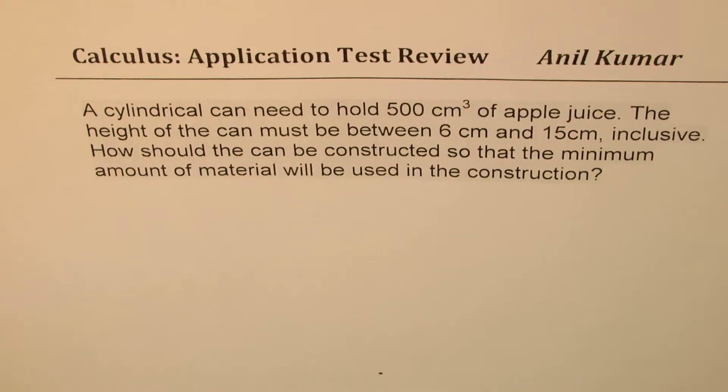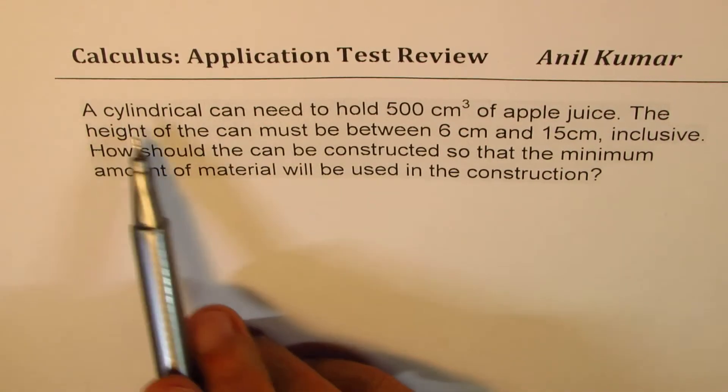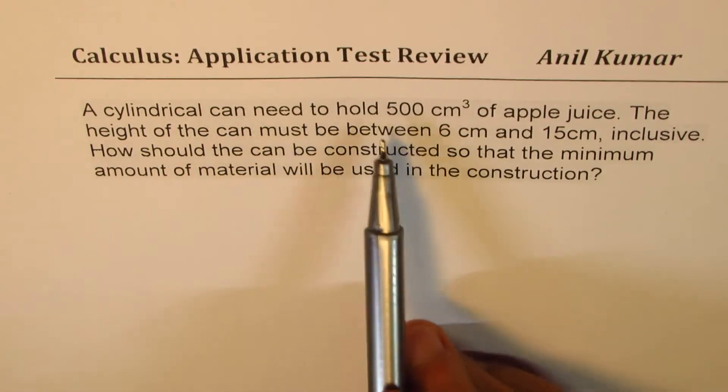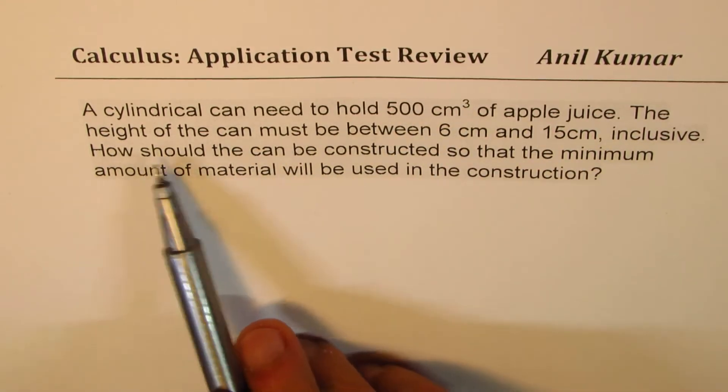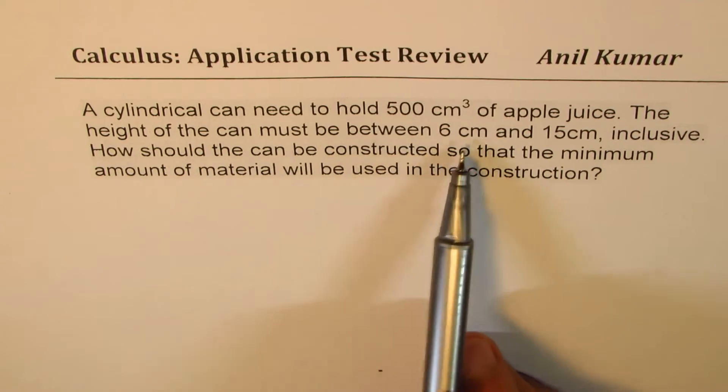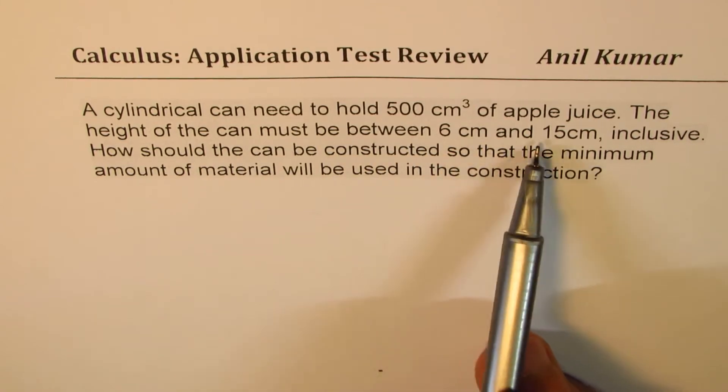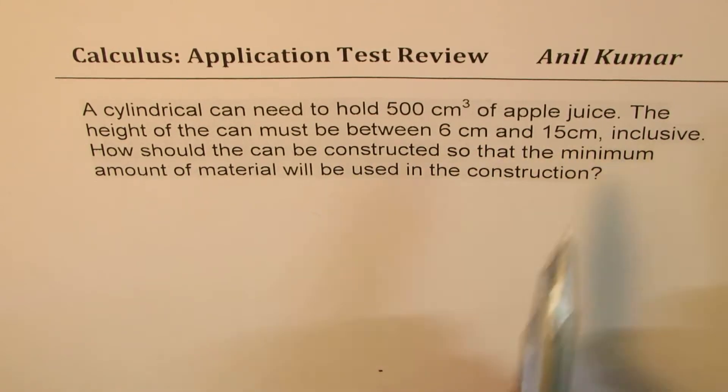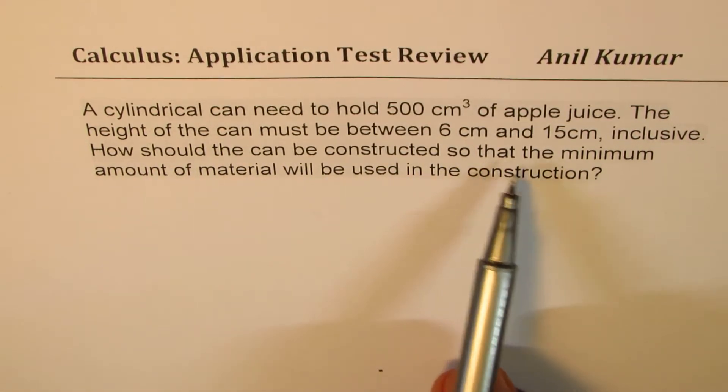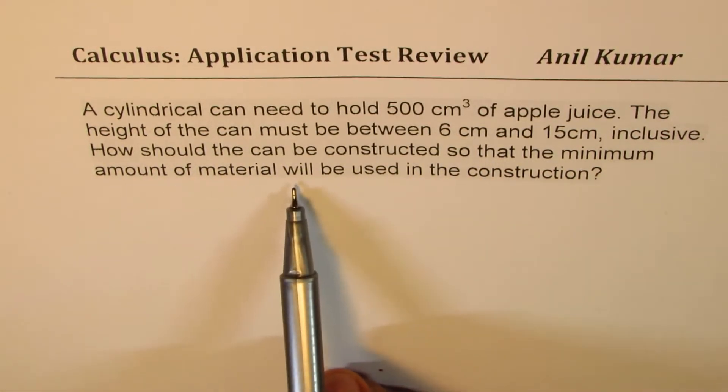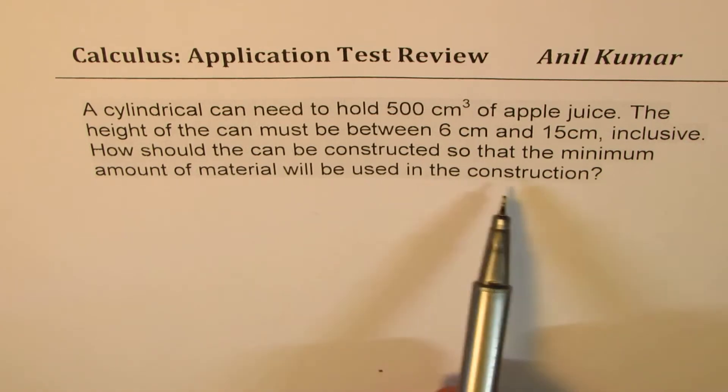I'm Anil Kumar sharing with you a test question on application of derivatives. The question here is: a cylindrical can need to hold 500 centimeter cube of apple juice. The height of the can must be between 6 centimeters and 15 centimeters inclusive. How should the can be constructed so that the minimum amount of material will be used in the construction?